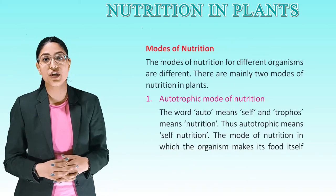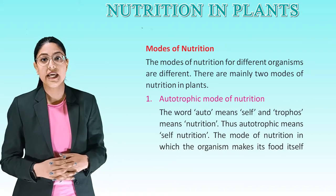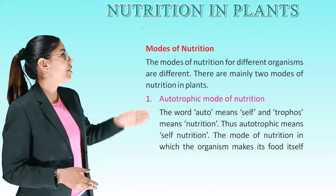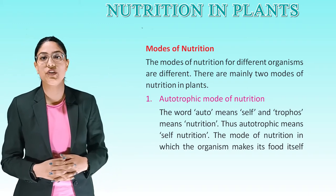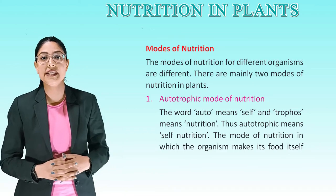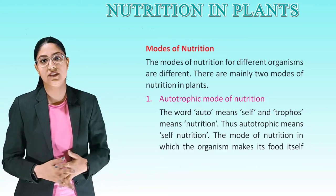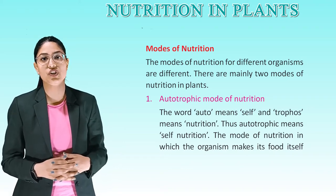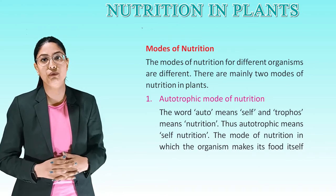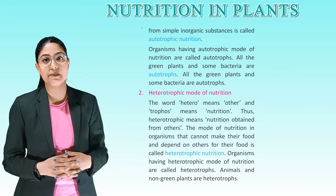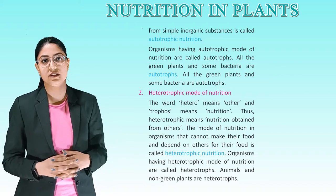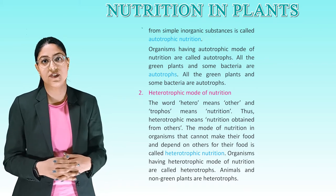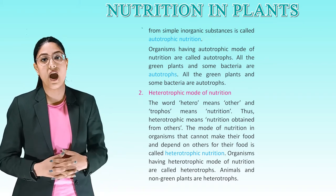Modes of nutrition. The modes of nutrition for different organisms are different. There are mainly two modes of nutrition in plants. The first one is autotrophic mode of nutrition. The word 'auto' means self and 'trophe' means nutrition. Thus, autotrophic means self-nutrition — the mode of nutrition in which the organism makes its own food from simple inorganic substances. Organisms having autotrophic mode of nutrition are called autotrophs. All green plants and some bacteria are autotrophs.